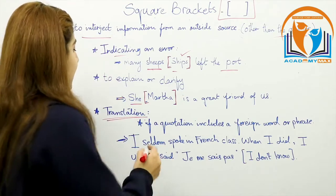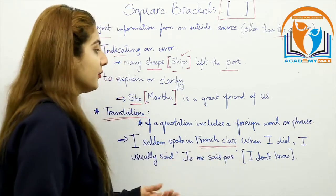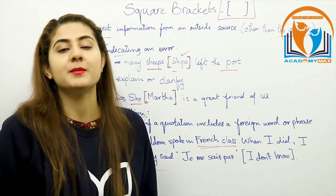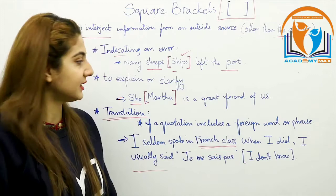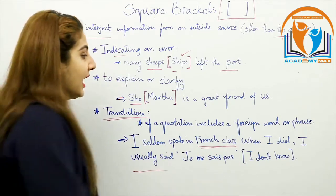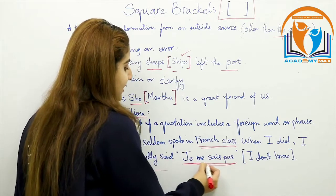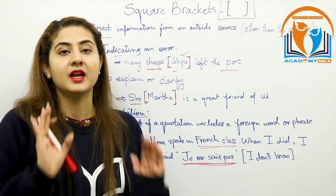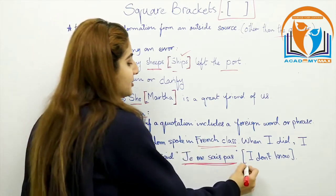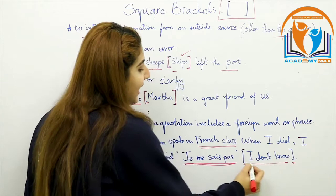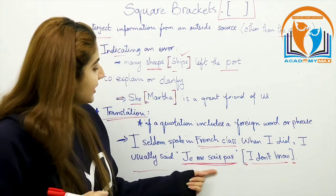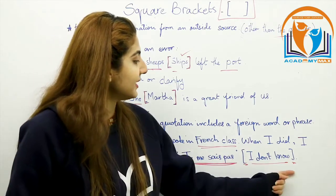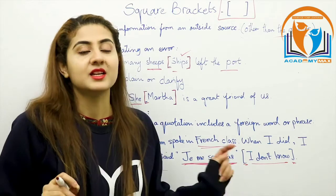Here we can see an example: 'I once spoke in French class.' The whole sentence or phrase is in French, and we don't know what it means. So in order to understand it, the translation is written in square brackets in English. This way we have figured out that this is the translation of the French phrase.